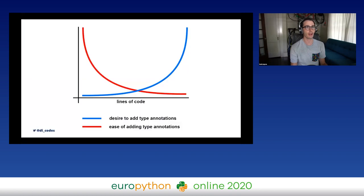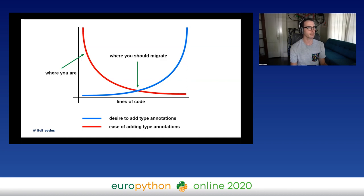Here's a handy graph: the time to start thinking about static typing is not when you're the size of Dropbox or Google, but sometime before that. So you're probably here — this is when you should start thinking about adding type annotations. Here's when you'll probably actually do it. But that's okay — you can gradually add it as you go.